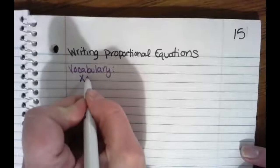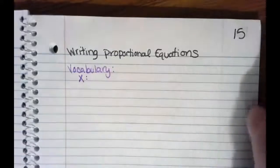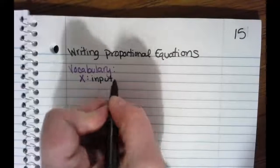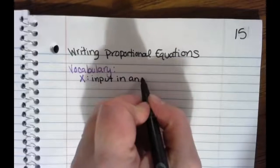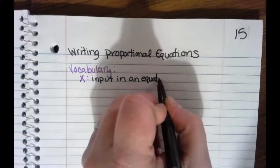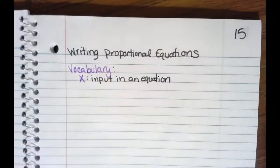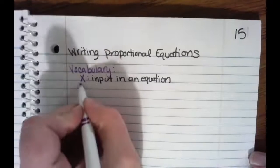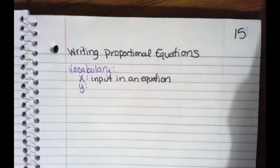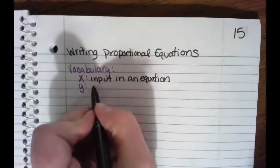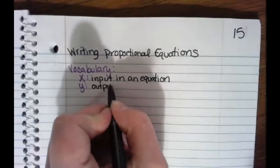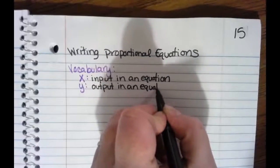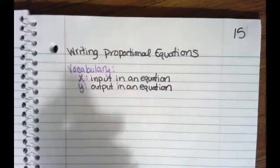We're going to talk about X. X is the input in an equation — that's the thing that goes inside our function machine. We put it in the function machine and wait to see what comes out. Y is our output in an equation. So we put X inside that function machine box.